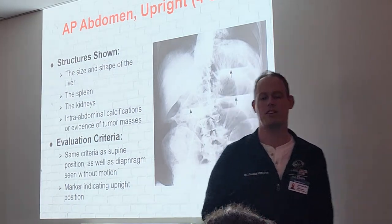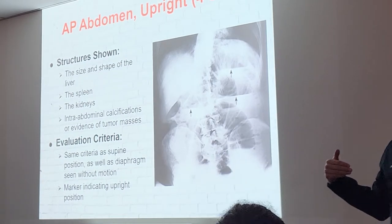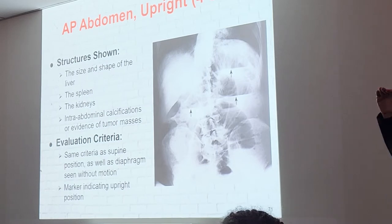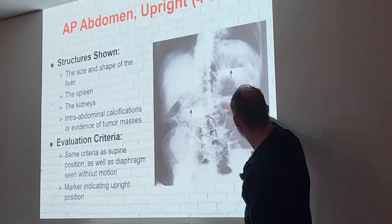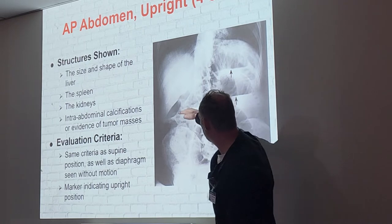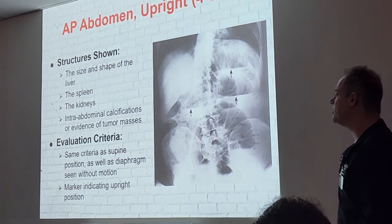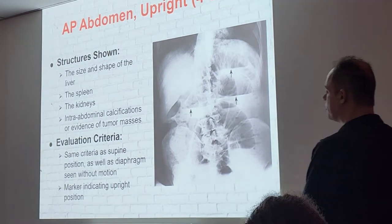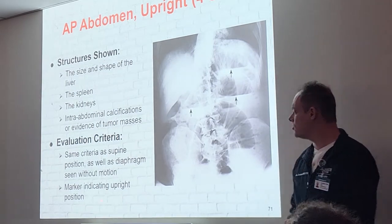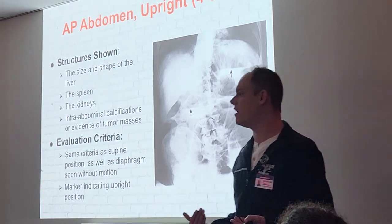That's a clear indication it's an upright abdomen. On a KUB you won't see those straight lines because the patient is laying flat on their back. Standing up, air rises with gravity and cuts off that horizontal line; any fluid falls down. Criteria: same as our supine, but we do want to see the diaphragm without motion — we're doing this on expiration by the way — and we want to include a marker since it's an upright position, because not every patient has air.